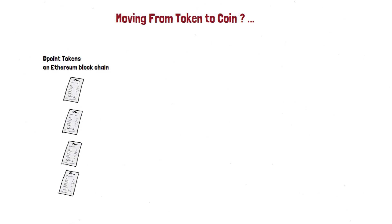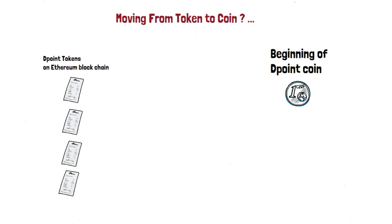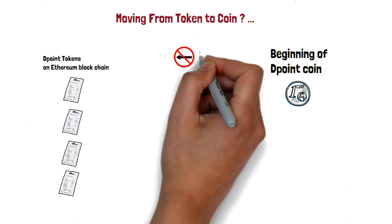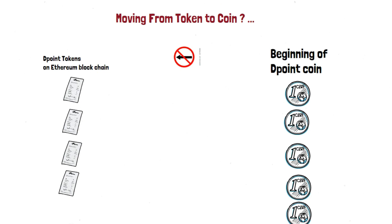Is it possible to move or convert a token to a coin, or a coin to a token? A coin cannot be converted to a token. You can exchange values — if a coin is worth 10 rupees and a token is worth 10 rupees, you can exchange them, but that's not a conversion. Can we convert a token to a coin? Yes. Let's say I've hosted my project on the Ethereum blockchain and have a token called DPoint Token.